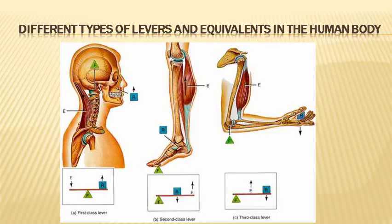A first class lever, as seen in the head, promotes balance and stability. A second class lever, as in the leg experienced while walking or running, amplifies the strength of the muscle.